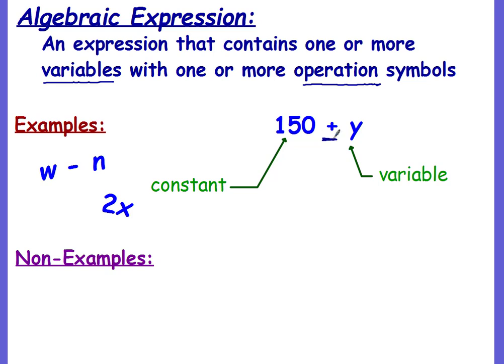And then you have the operation symbol, a plus. Okay, here, w minus n - there's a variable, there's actually two variables, and there's an operation. 2x - this is also an expression because this means multiplication. Even though this symbol is not there, it's understood that it's multiplication, 2 times x.